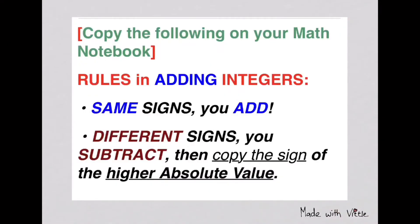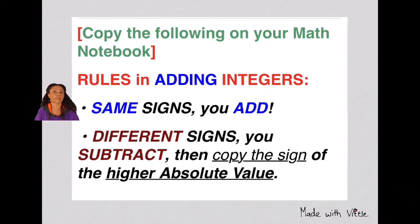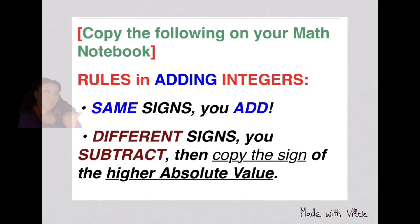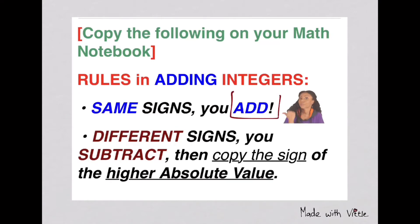When you're adding integers, the first thing you have to look for is: are they of the same signs? If they are of the same signs, whether they're both positive or both negative, then you have to add them. Then just copy the same sign.